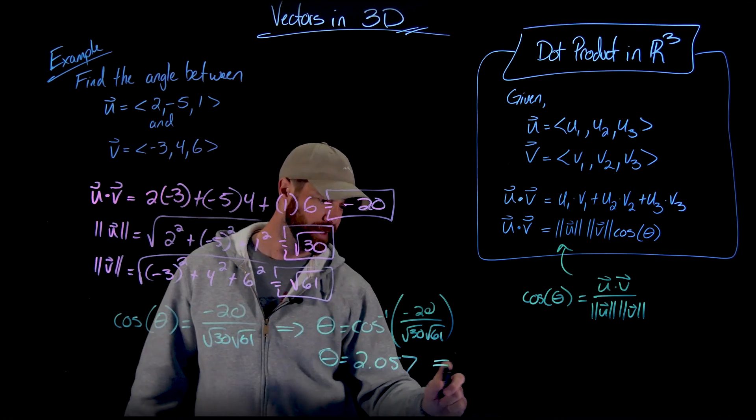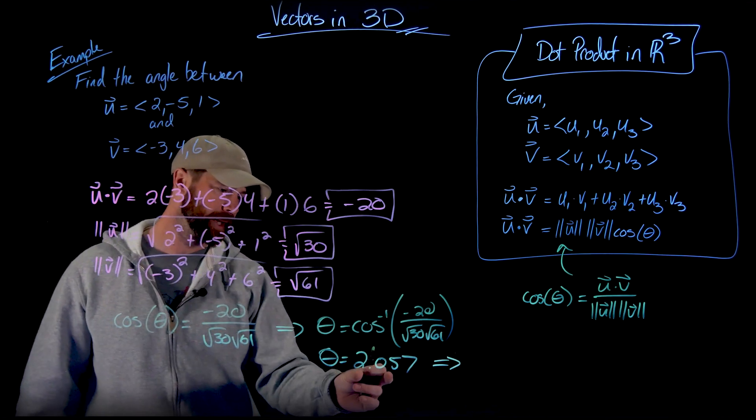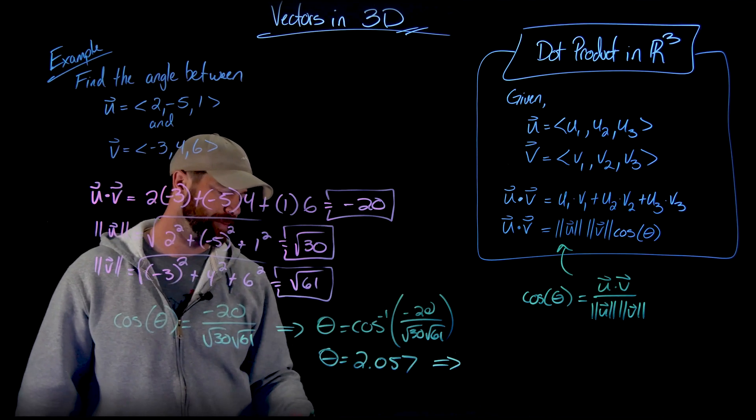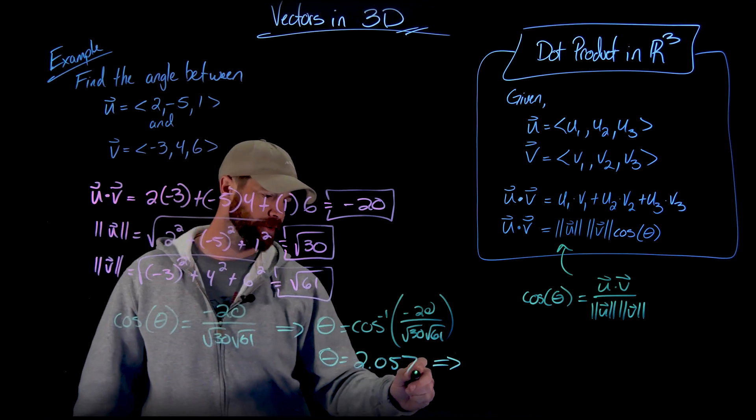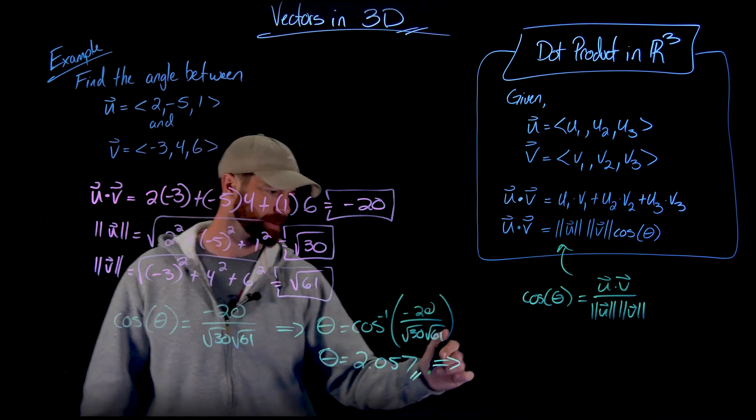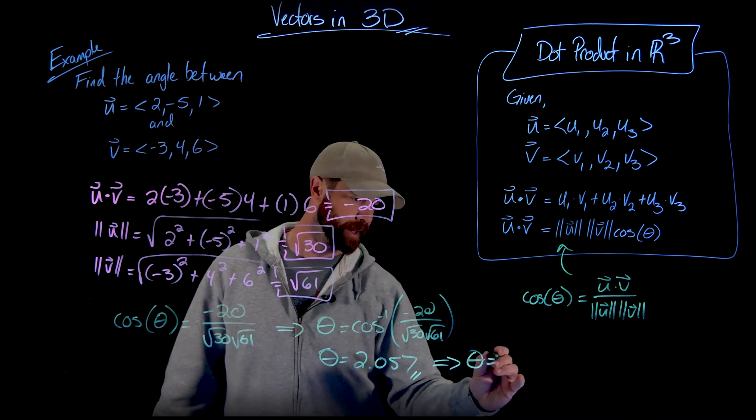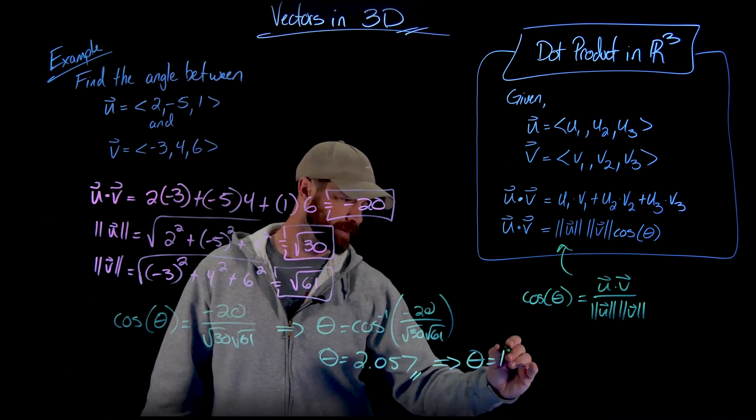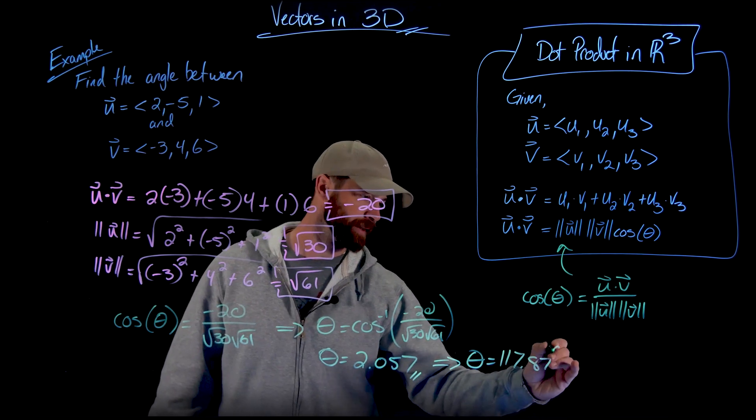And when I plug that in my calculator, I was in radians mode, and I got 2.057 radians. If I wanted to translate that into degrees, all I got to do is multiply that by a factor of 180 over pi. That's radians. In degrees, what I got was 117.87 degrees.